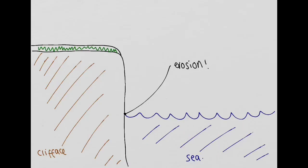Now, waves cause the most erosion at the foot of the cliff. This here is the foot of the cliff, so the greatest rate of erosion is occurring at this point here.